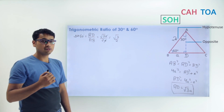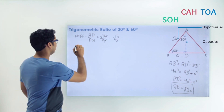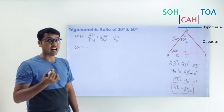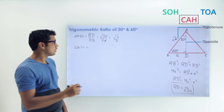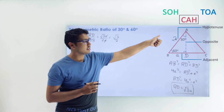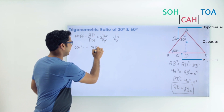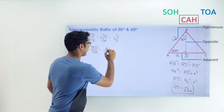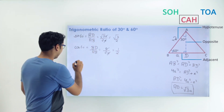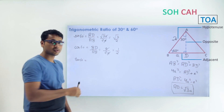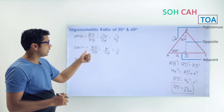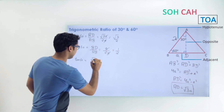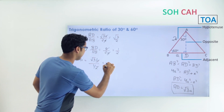For cos 60°, using SOHCAHTOA — cosine is adjacent over hypotenuse — the adjacent side is BD and the hypotenuse is AB: cos 60° = BD/AB = A/2A = 1/2. For tan 60°, dividing sin 60° by cos 60°: (√3/2) ÷ (1/2) = √3.